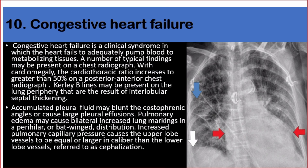Number ten: congestive heart failure. Congestive heart failure is a clinical syndrome in which the heart fails to adequately pump blood to metabolizing tissues. A number of typical findings may be present on chest radiograph. With cardiomegaly, the cardiothoracic ratio increases to greater than 50% on a posteroanterior chest radiograph. Kerley B lines may be present on the lung periphery, resulting from interlobular septal thickening. Accumulated pleural fluid may blunt the costophrenic angles or cause large pleural effusions. Pulmonary edema may cause bilateral increased lung markings in a perihilar or bat-wing distribution. Increased pulmonary capillary pressure causes upper lobe vessels to be equal or larger in caliber than lower lobe vessels — referred to as cephalization.